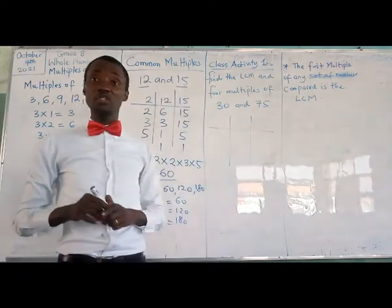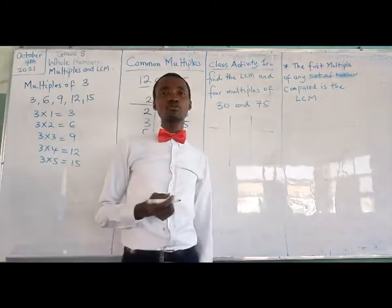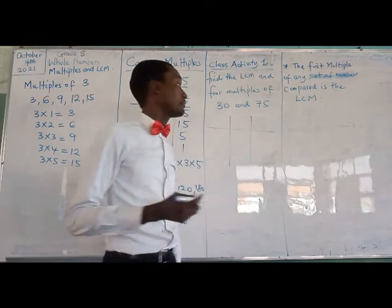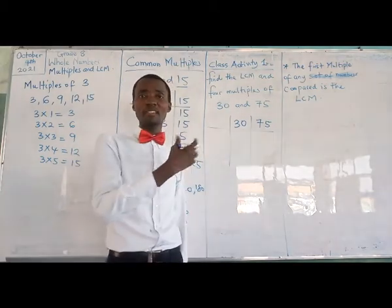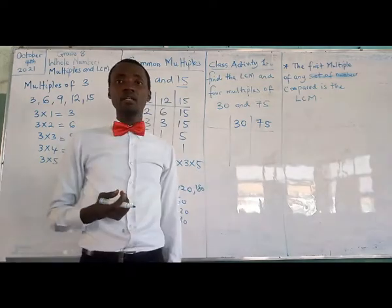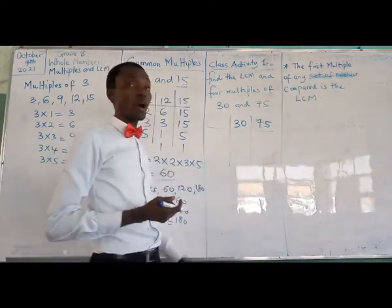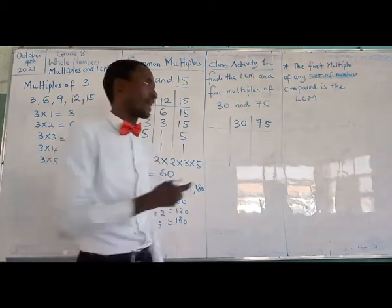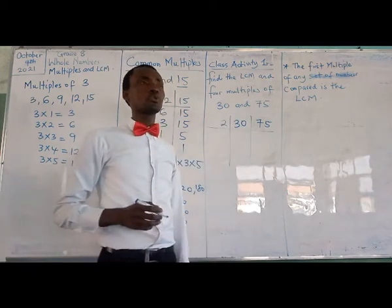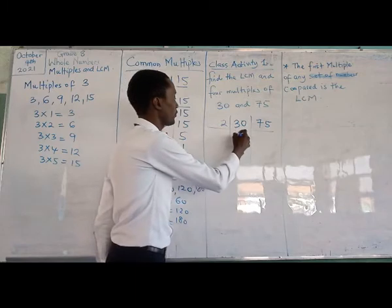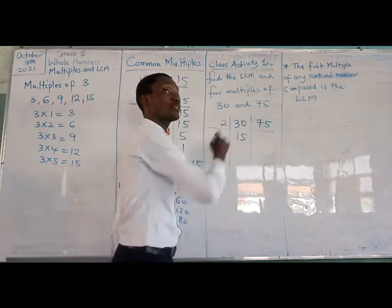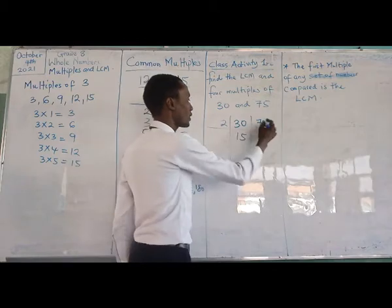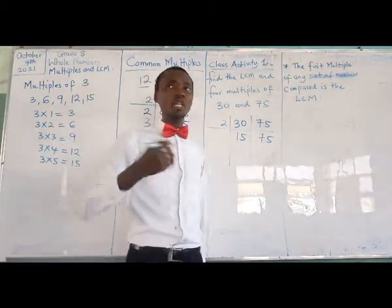I'm going to give you some time to try this out. Now we'll attempt the problem. The first thing I look out for is to see if I have any number that is even. You will discover that there is one that is even, and that is 30. With that 30, I can divide by 2. So 2 dividing 30 will give me 15. Now, 2 can't divide 75 because I am dealing with LCM — I apply the 'find it in either' rule.